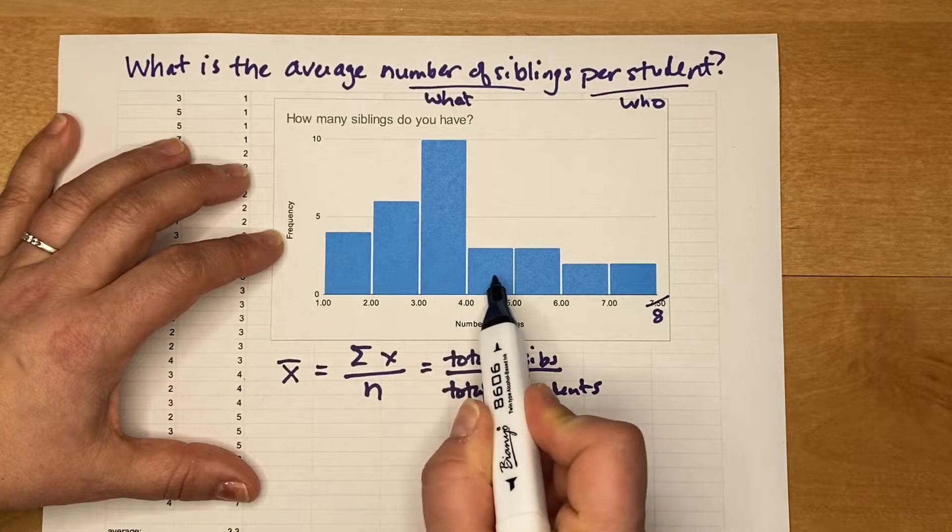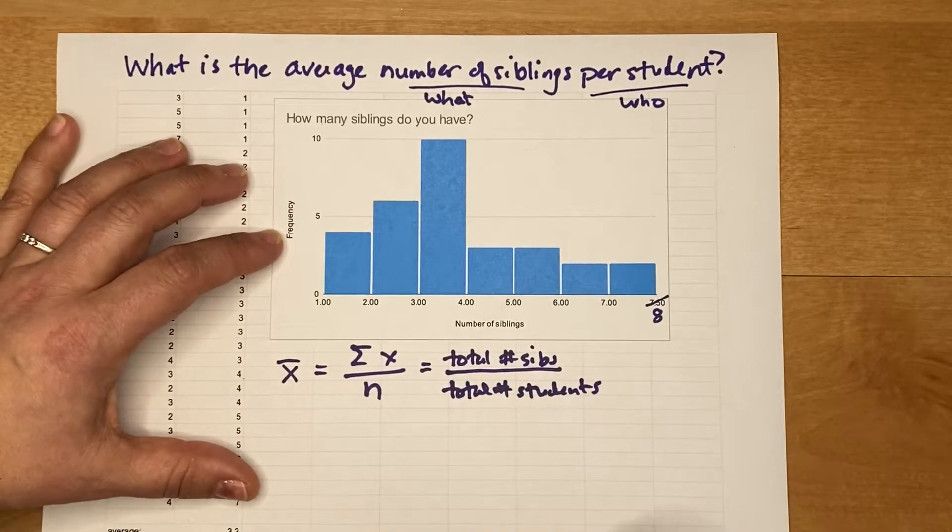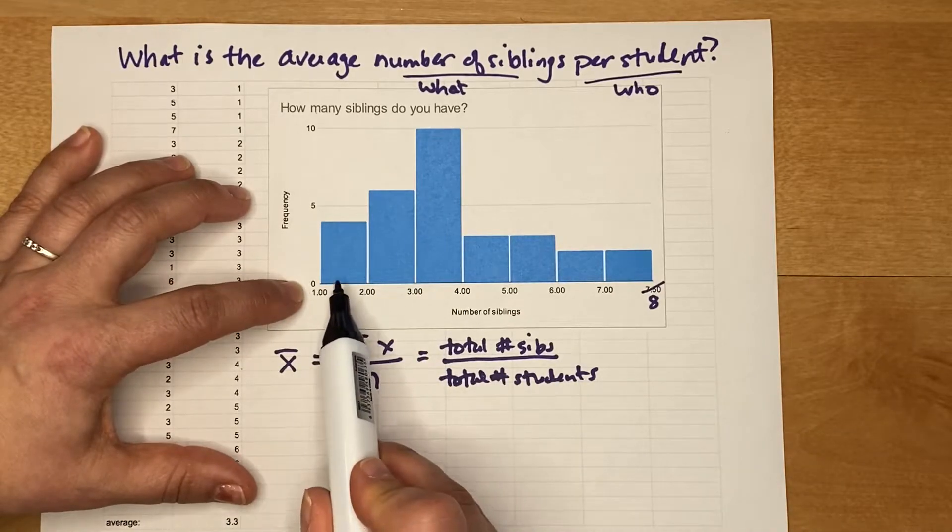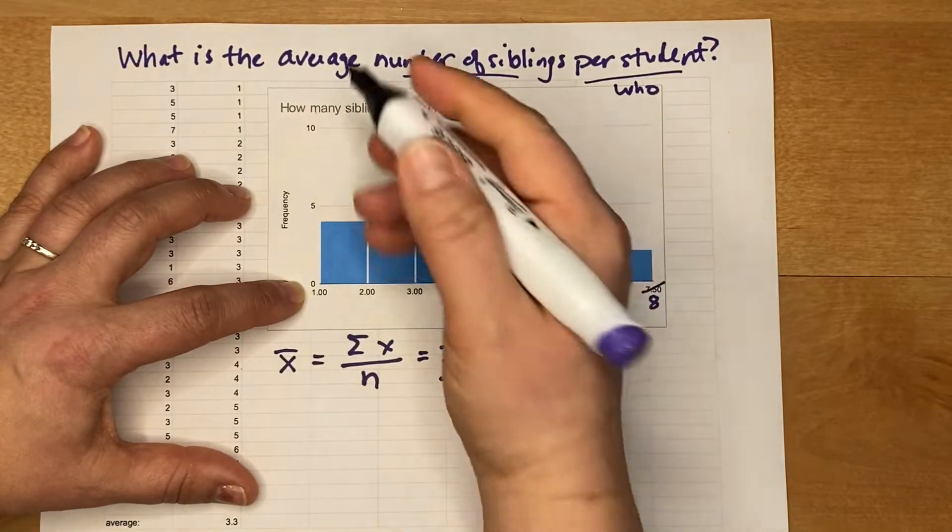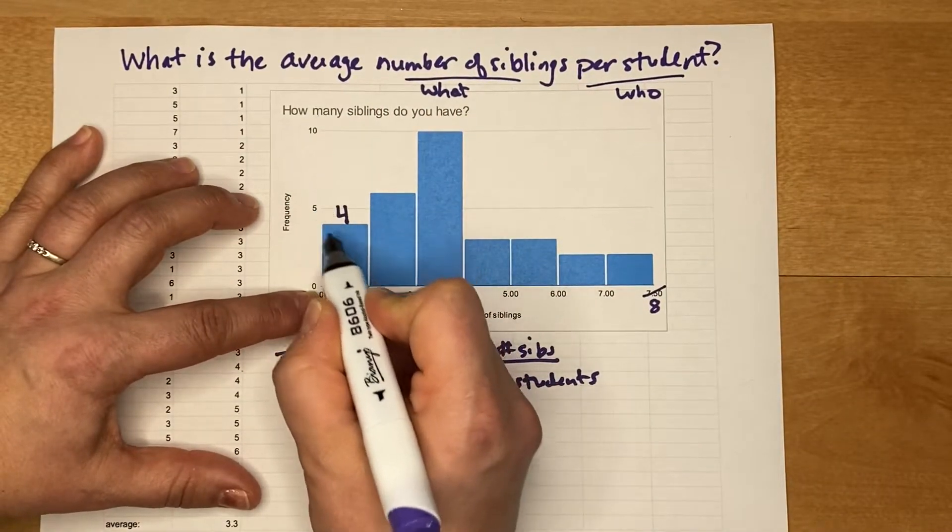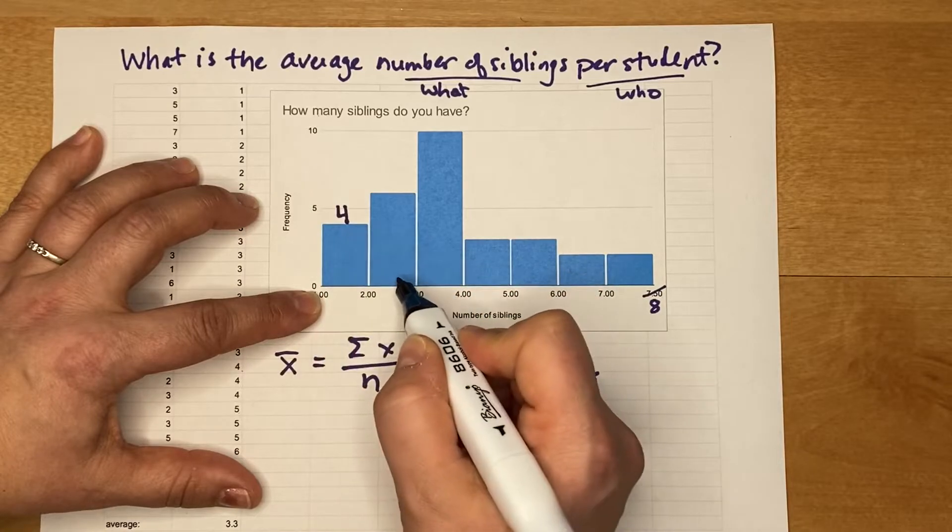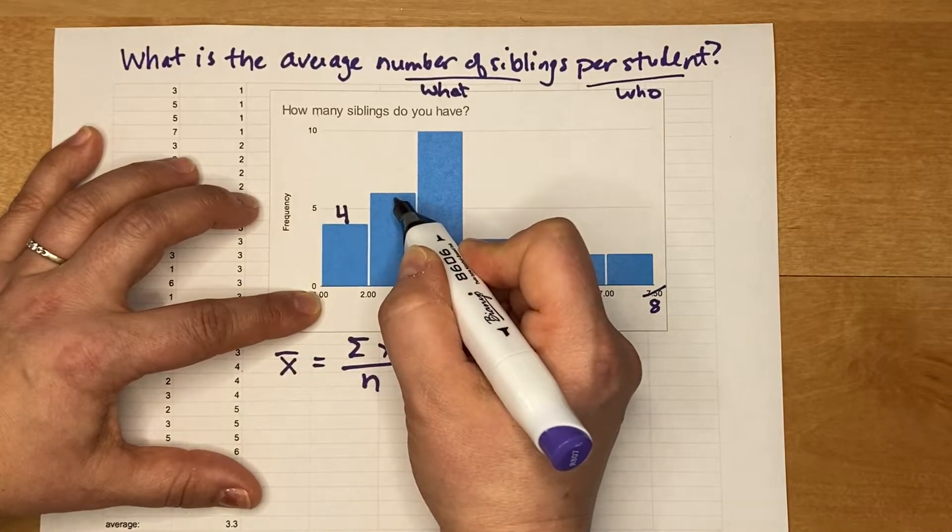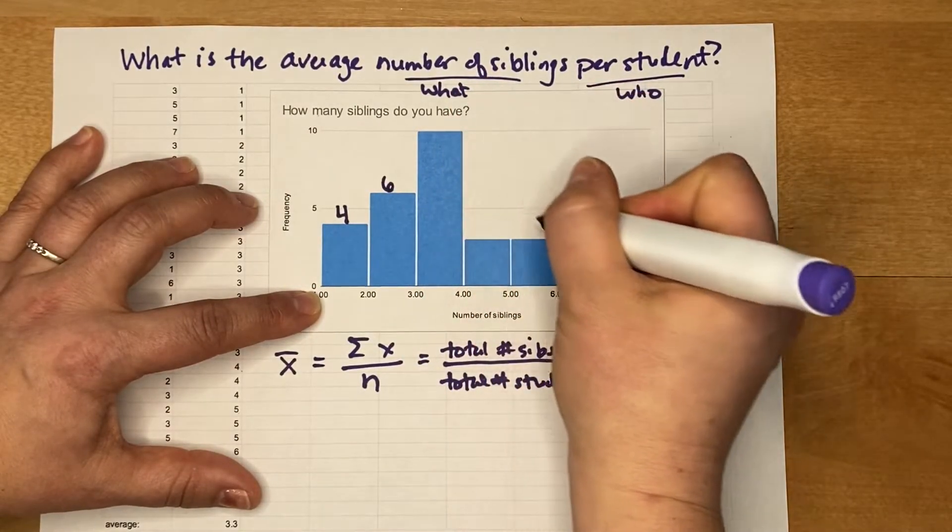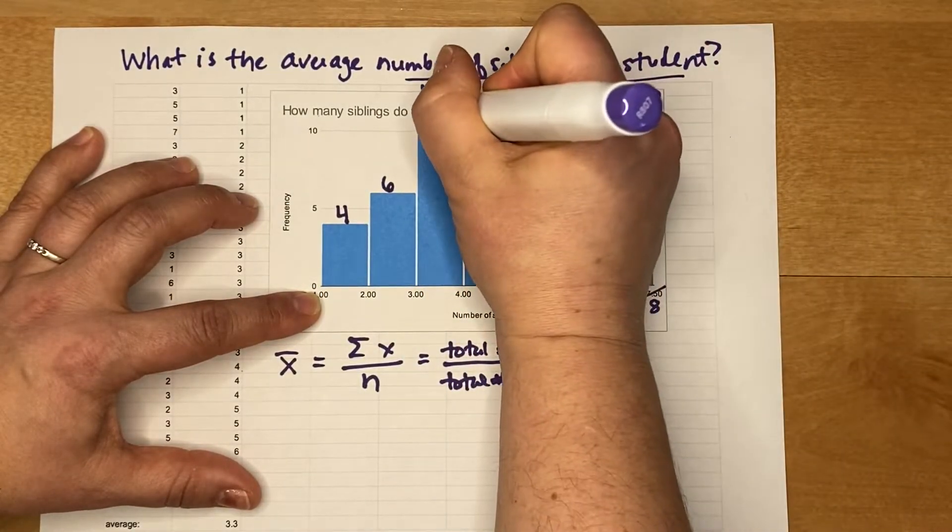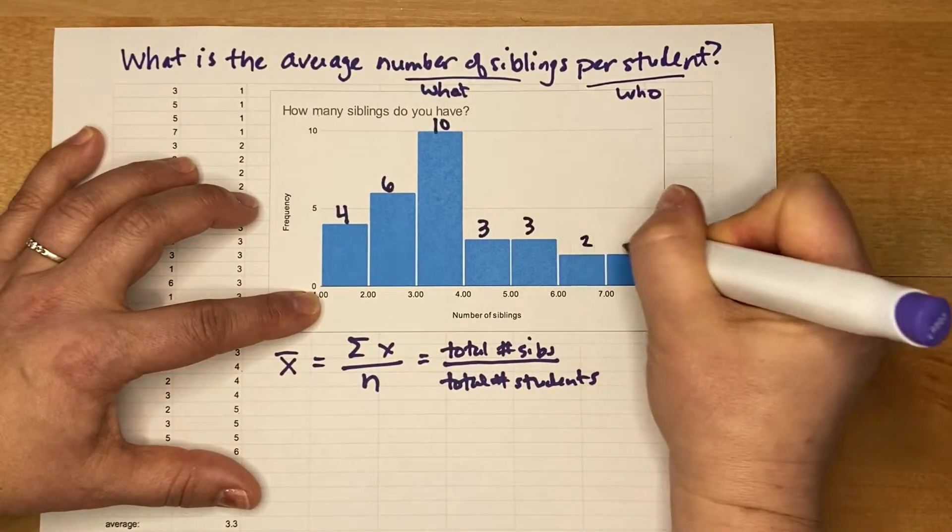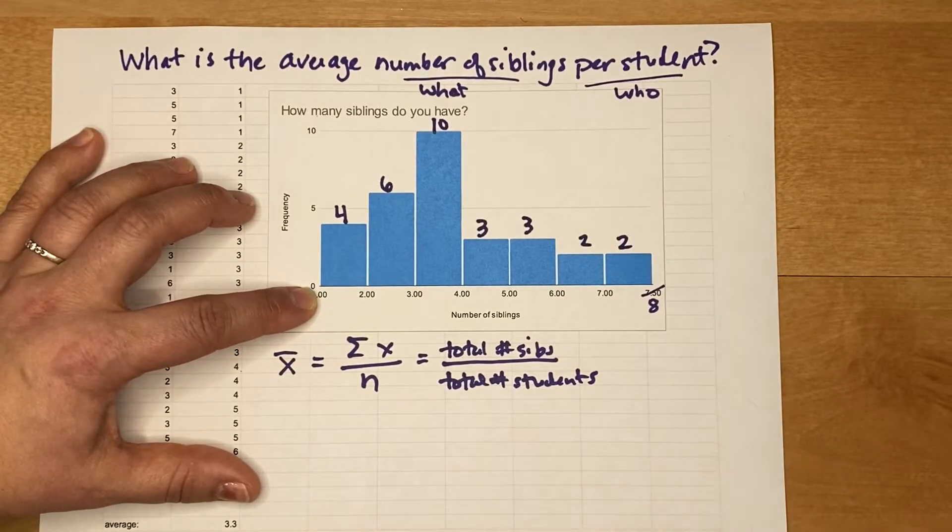Now a common mistake that students make is they think that there are seven students because there are seven bars in this histogram. But that's not true because we have four students in this first bar. So I'm reading the graph and estimating from 0 to 5, this looks to be about 4. This next bar we have a frequency of 6, so that's 6 students.